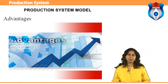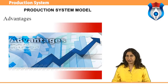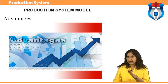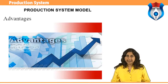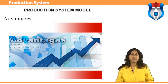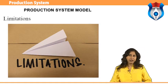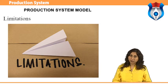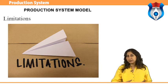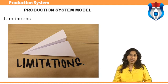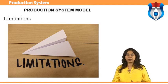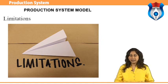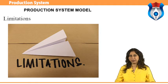Advantages of mass production include: higher rate of production with reduced cycle time; higher capacity utilization due to line balancing; less skilled operators required; and low process inventory. Limitations include: breakdown of one machine will stop an entire production line; line layout needs major change with changes in product design; high investment in production facilities; and the cycle time is determined by the slowest operation.